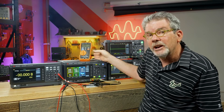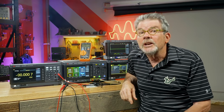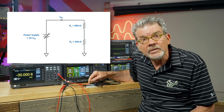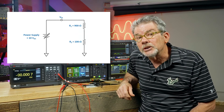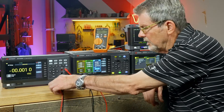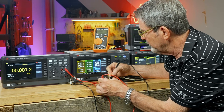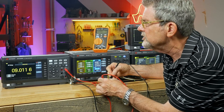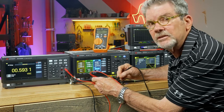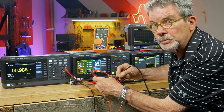With my DC power supply set to 10 volts and connected to this simple resistive divider circuit, based on Kirchhoff's voltage law, there should be about 9 volts dropped across R1 and about 1 volt dropped across R2, which has a value of 100 ohms. Let's verify that with this DMM. Measuring the voltage across R1, we can see it measures 9.01 volts — pretty close to what I expected. And across R2 it reads 0.988, which is about 1 volt. That's pretty much what I expected.